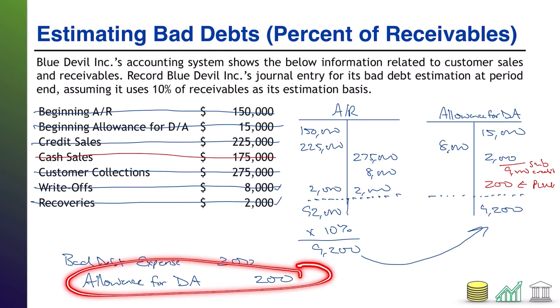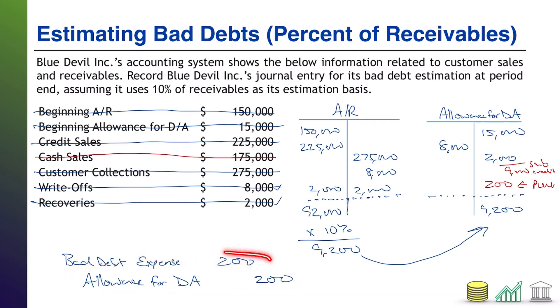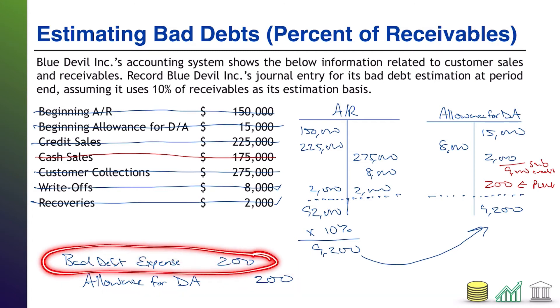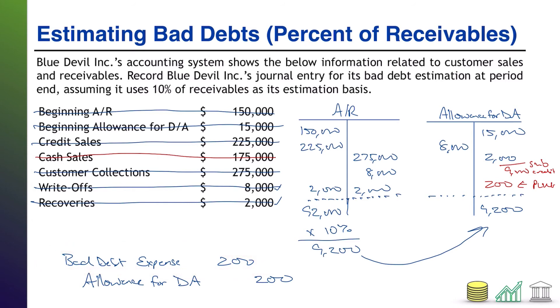So the journal entry we need to record is: credit allowance for doubtful accounts $200, and expense it through the income statement as bad debt expense $200.